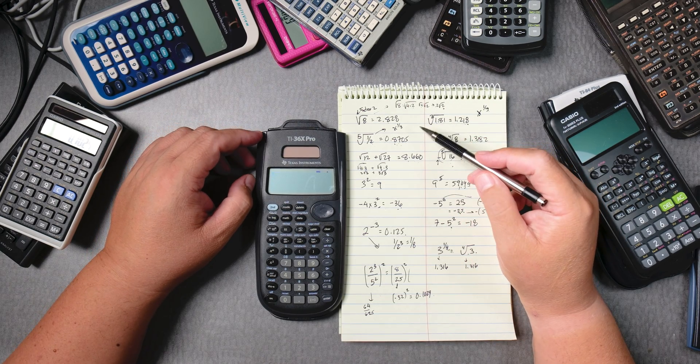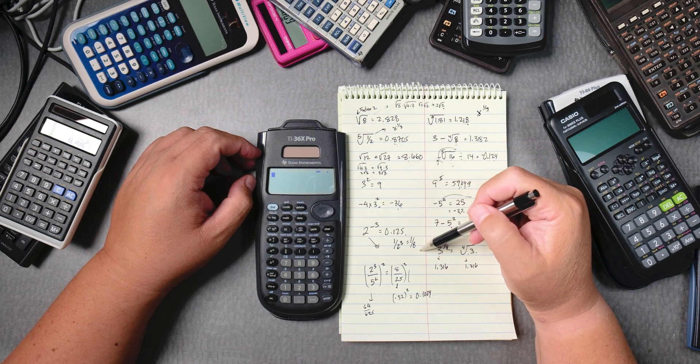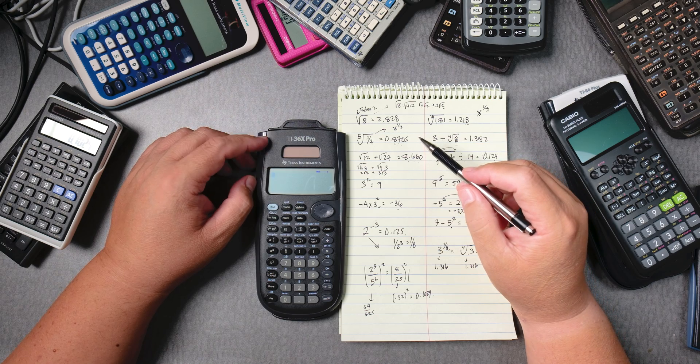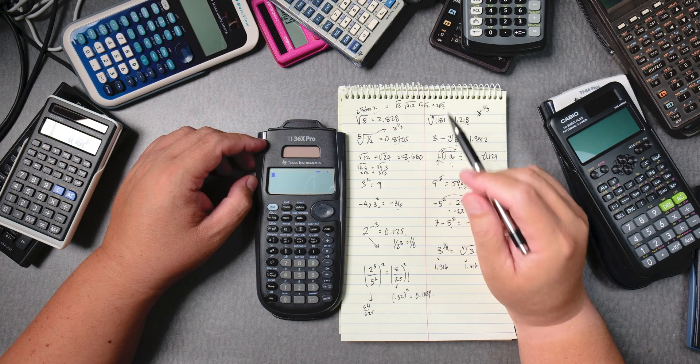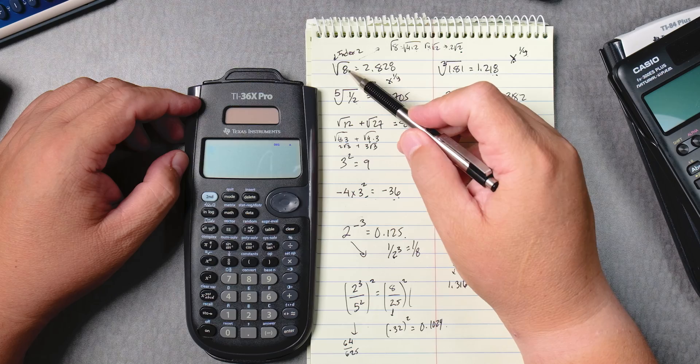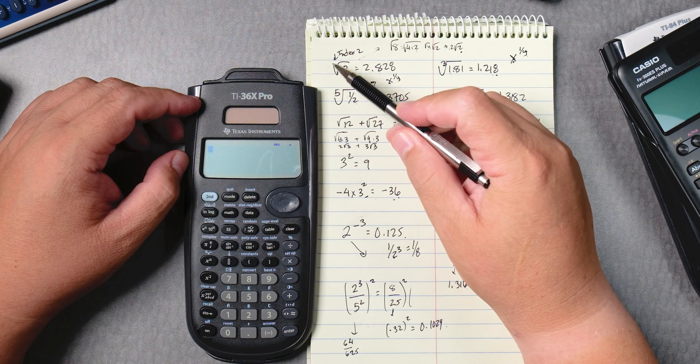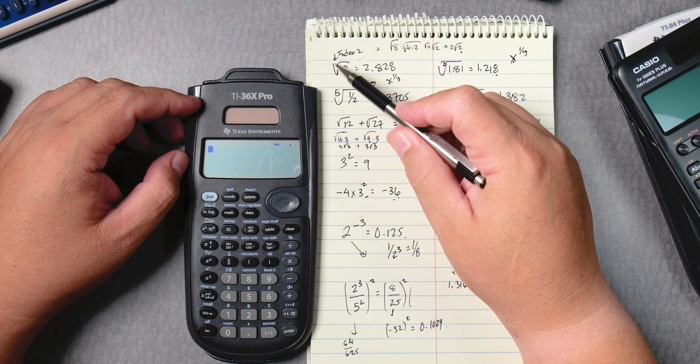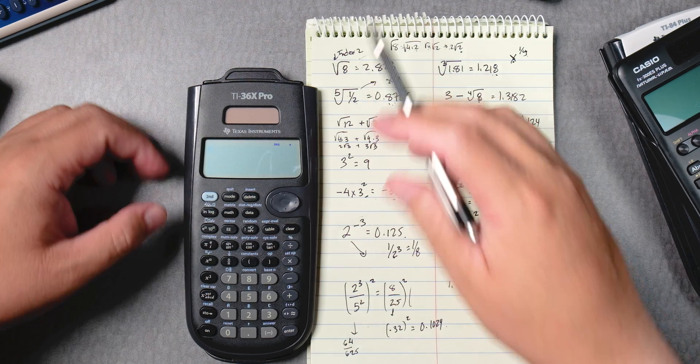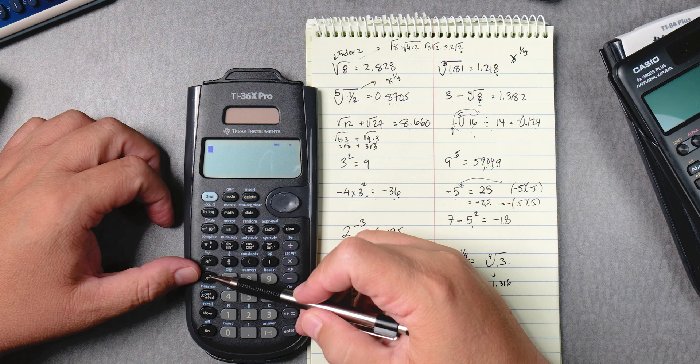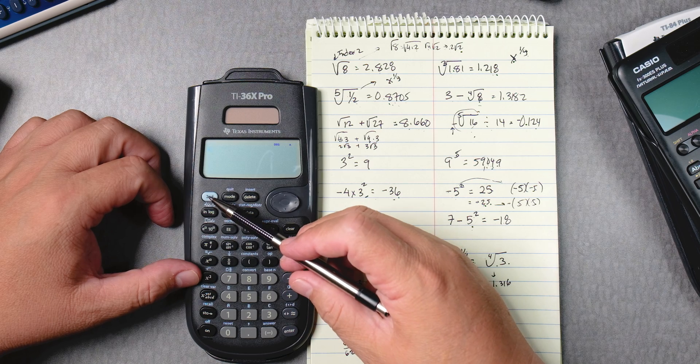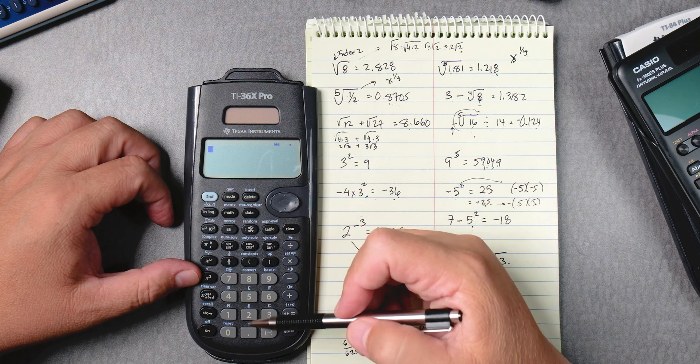Okay, we're going to do roots and powers using the TI-36X Pro. So when we take the square root of 8, there's a number here called an index, in this case an index of 2. The square root will be above the x squared key, so we got to press second and then x squared.